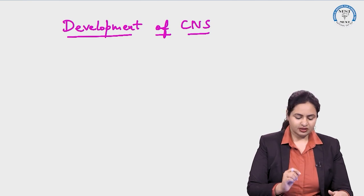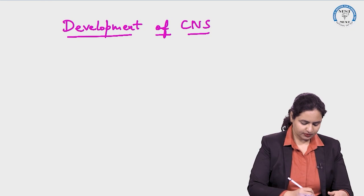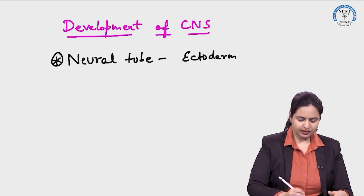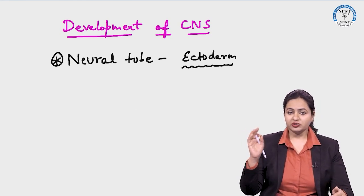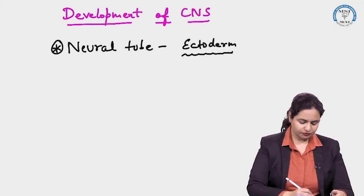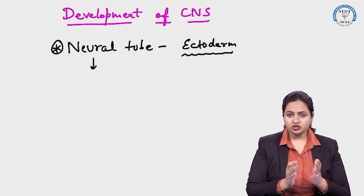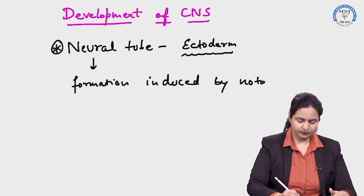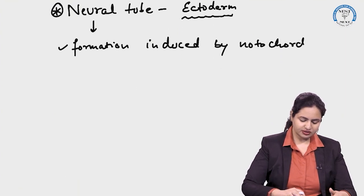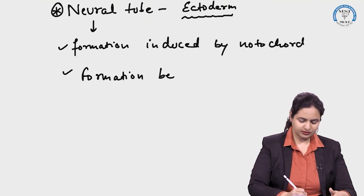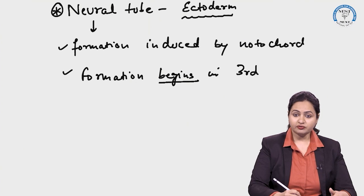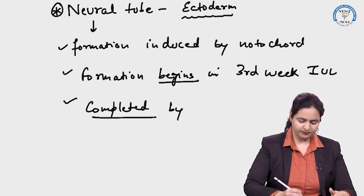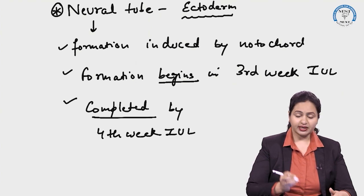The development of the CNS is from the neural tube, which is derived from ectoderm — so all structures derived from the neural tube are ectodermal in nature. The formation of the neural tube is induced by the notochord, begins in the third week of intrauterine life, and is completed by the end of the fourth week of intrauterine life.